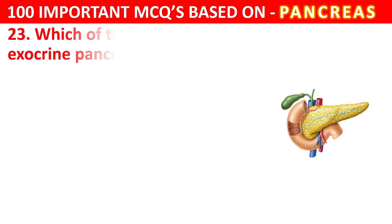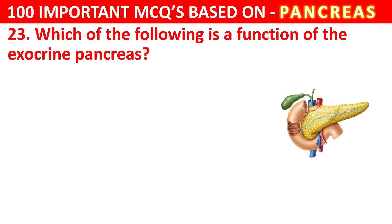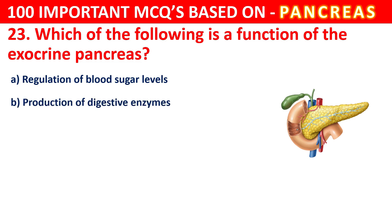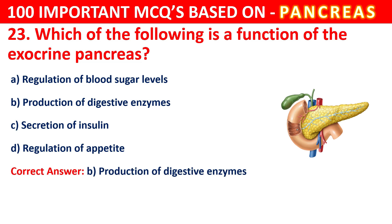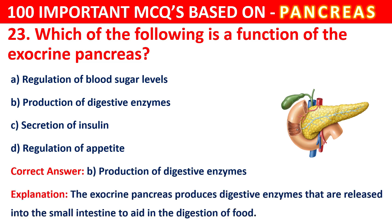Question 23. Which of the following is the function of the exocrine pancreas? Options are Regulation of blood sugar level, Production of digestive enzymes, Secretion of insulin, or Regulation of appetite. The correct answer is B, that is Production of digestive enzymes. The exocrine pancreas produces digestive enzymes that are released into the small intestine to aid in the digestion of food.